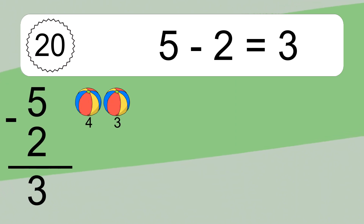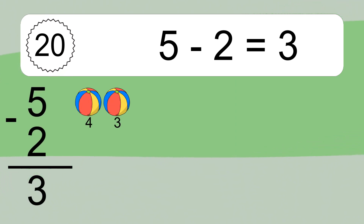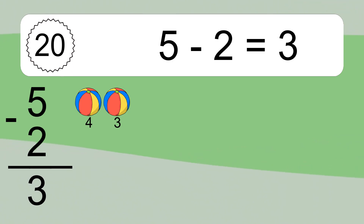5 minus 2 equals 3. Let's count it: 4, 3. We'll be right back.